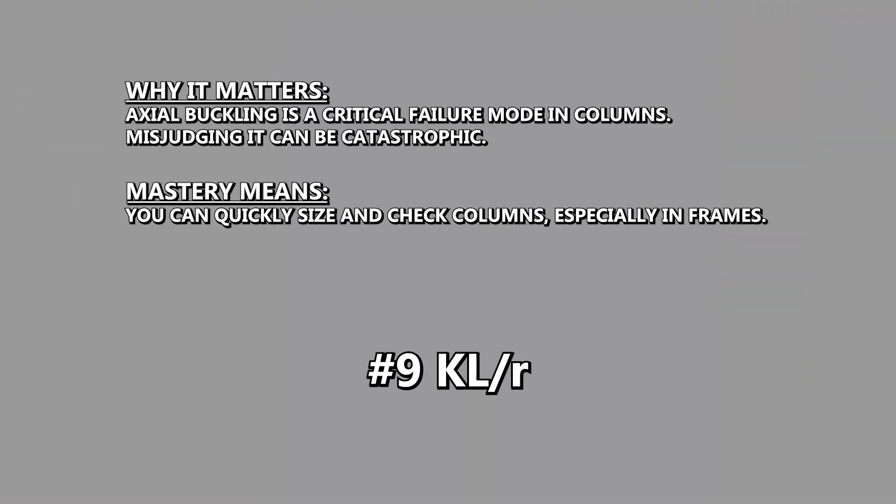Coming in at number nine, we have the concept of slenderness ratio for columns — KL over R. Understanding column stability is essential for safe axial design; it's pretty much the main thing that drives the design of columns. The slenderness ratio KL/R shows how column length, end conditions, and cross-sectional shape combine to influence buckling behavior. Each of those individually is a topic all their own, but all of them together drive column design. It's a small formula with huge consequences.